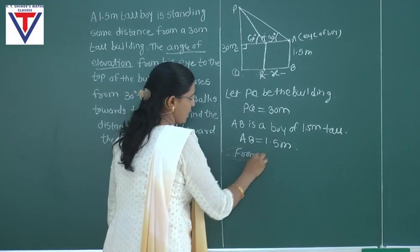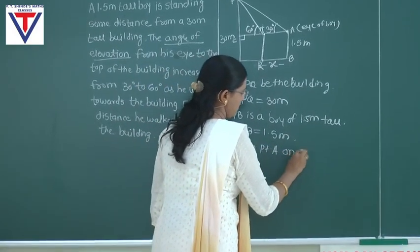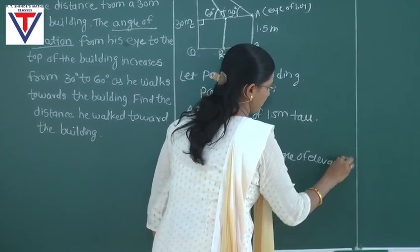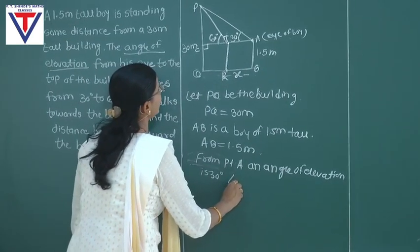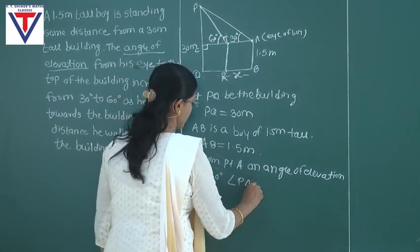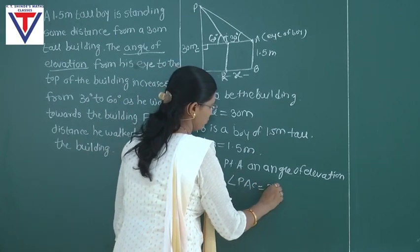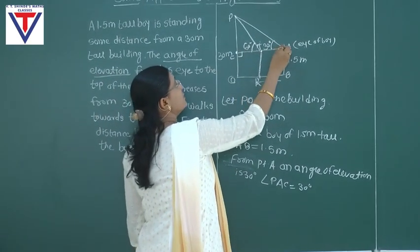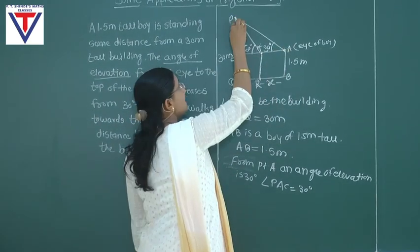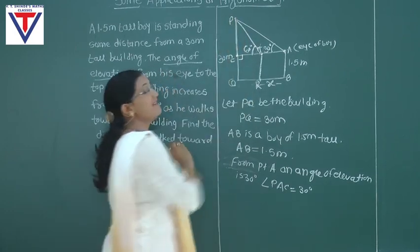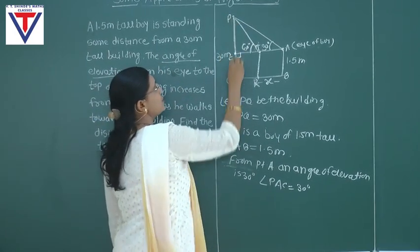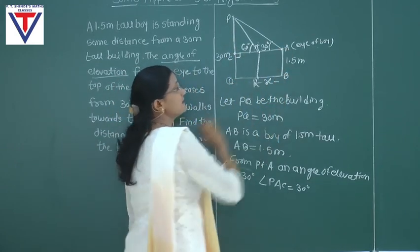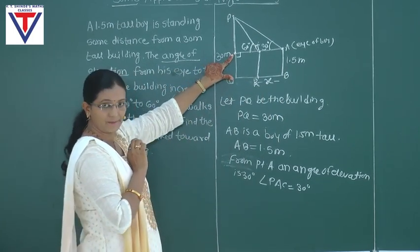From point A, the angle of elevation is 30 degrees. Now, if we want to remove the value of PC, the value of PC will be PC is equal to PQ minus CQ. We know that CQ is equal to AB because it is the height of the boy.